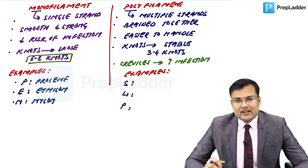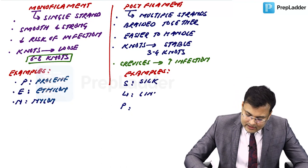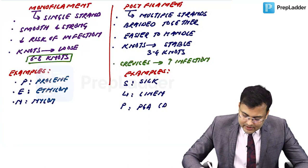Polyfilament sutures include silk, linen, and polyglycolic acid (dexin). The mnemonic SLIP makes these easy to remember. Image-based questions on sutures are very common in AIIMS, NEET, and INICET exams. Almost every year there is at least one question from sutures, and they often provide an image of the suture or its packet.